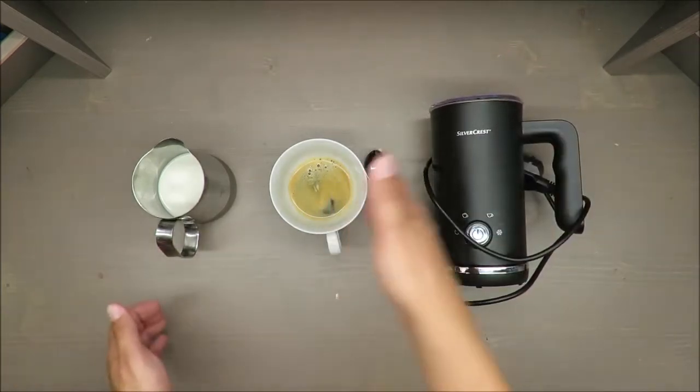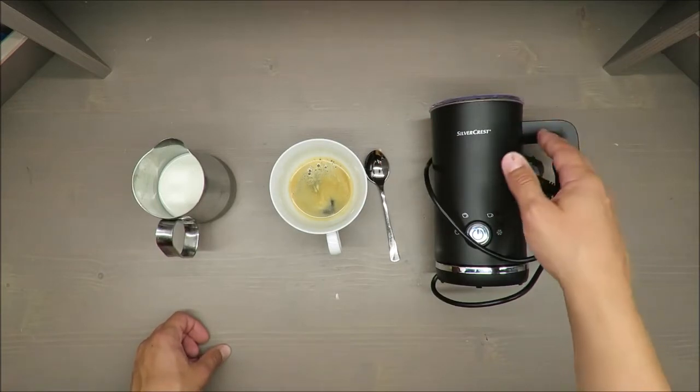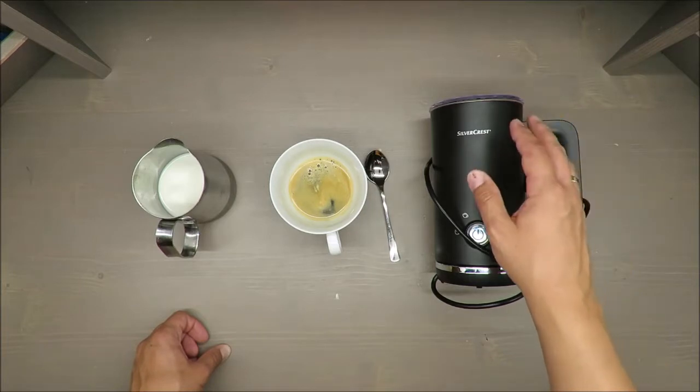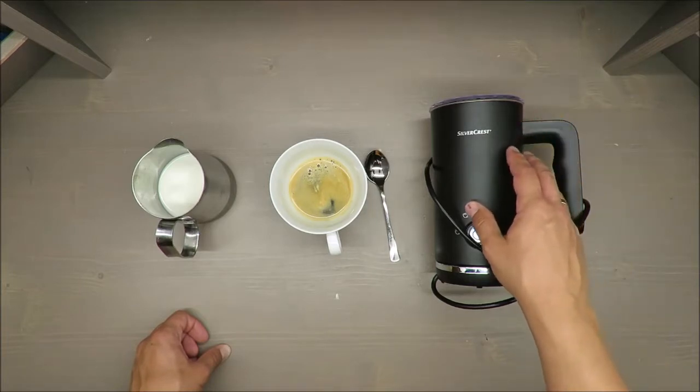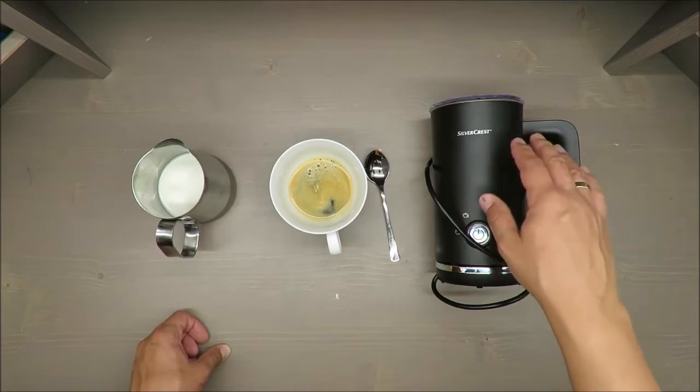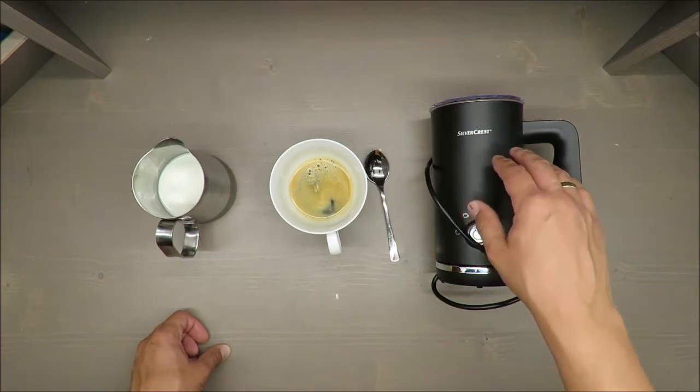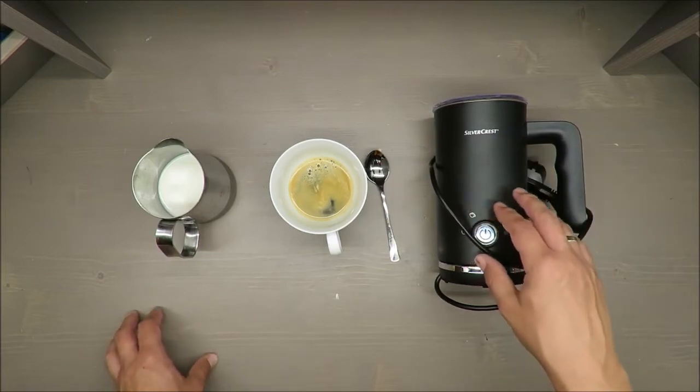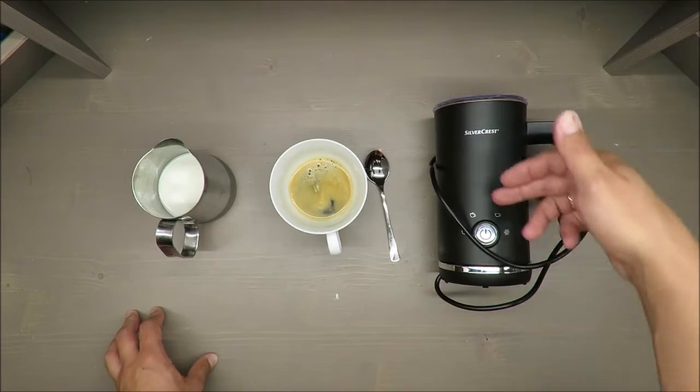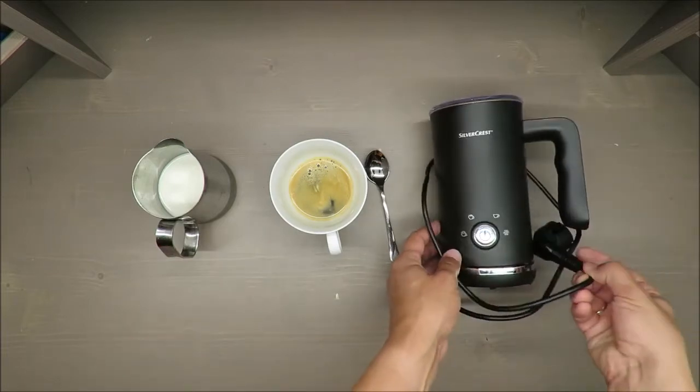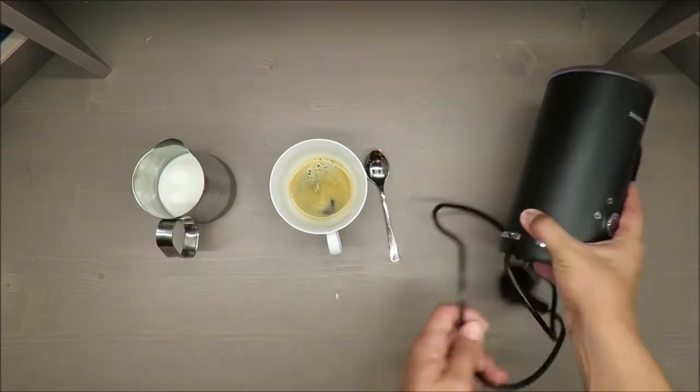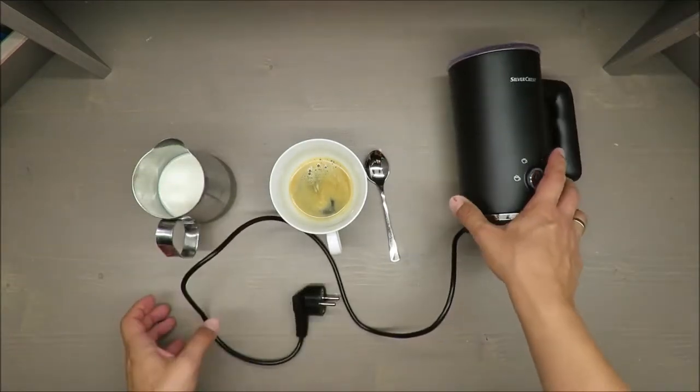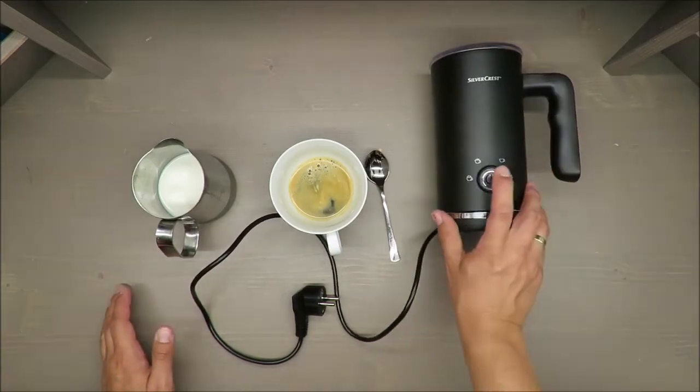So basic features on the beginning: this milk frother has a milk tank of maximum 300 milliliters for heating of the milk, and for frothing it has a maximum capacity of 150 milliliters. The power consumption is 500 watts.